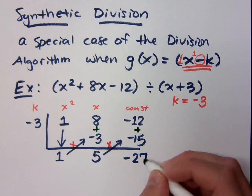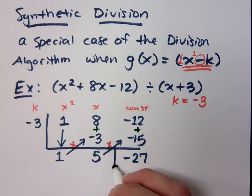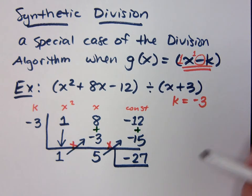You get negative 27. Now, I put a box around this here on the bottom like this. Now, let me tell you what these numbers on the bottom, which make up our answer, what they mean to us.